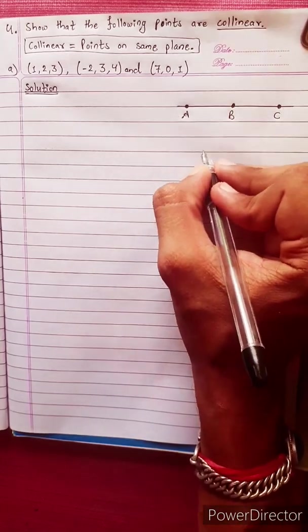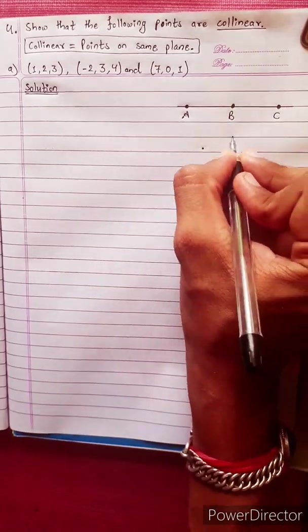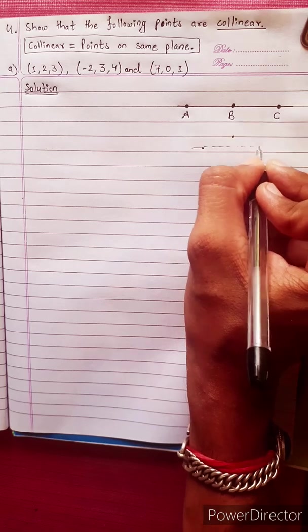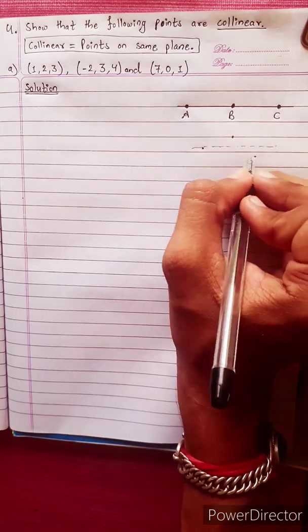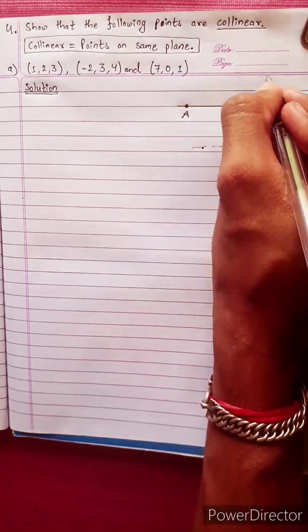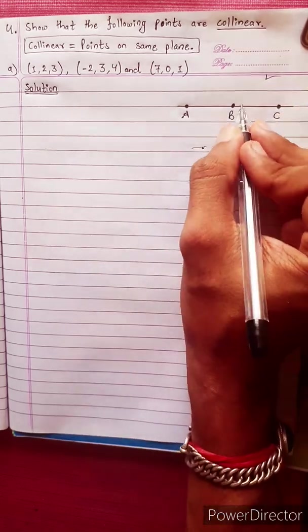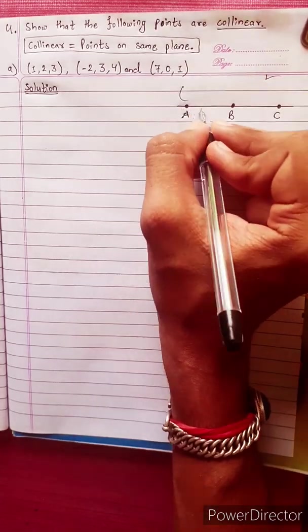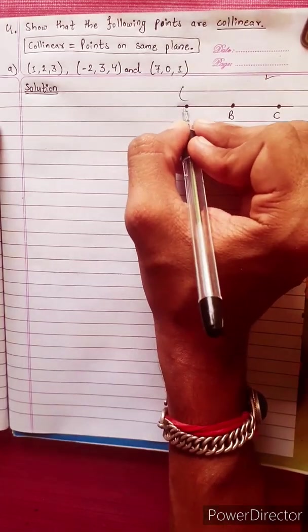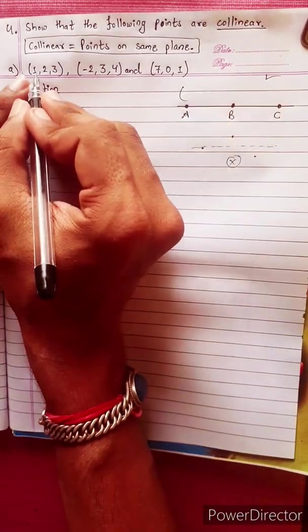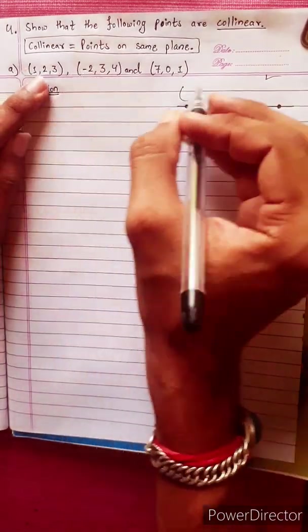Suppose you have 3 points. Let me do this. How do you do this? I will do this: 1, 2, 3.